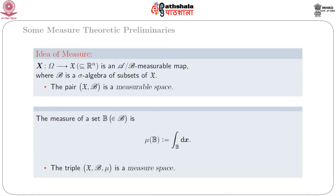First, we give an idea of measure. Suppose x is a mapping from omega to script X, which is a subspace of R to the power n, and script X is an A or B measurable mapping, where beta is a sigma algebra of subsets of script X. The pair (script X, beta) is a measurable space. The measure of a set B belonging to script beta is defined by mu of B equal to the integral over B of dx.